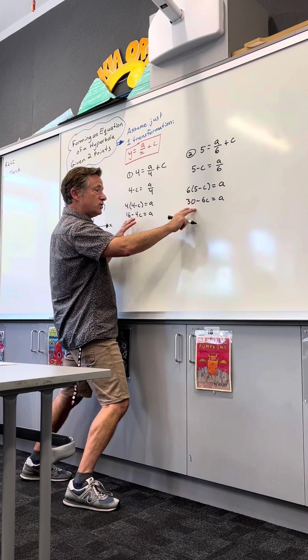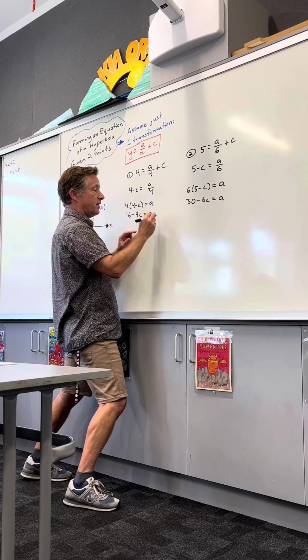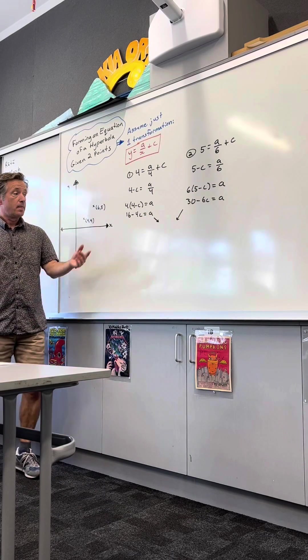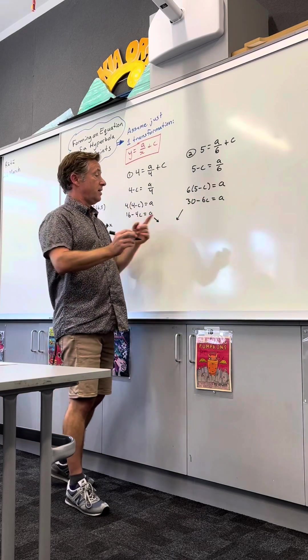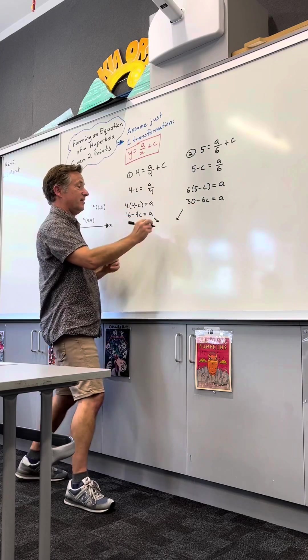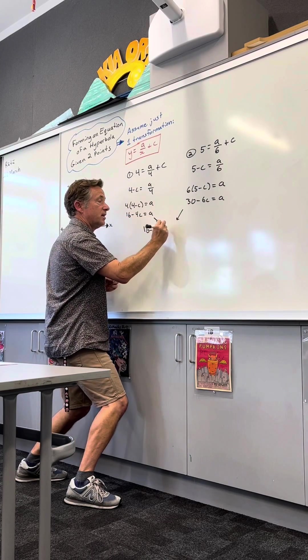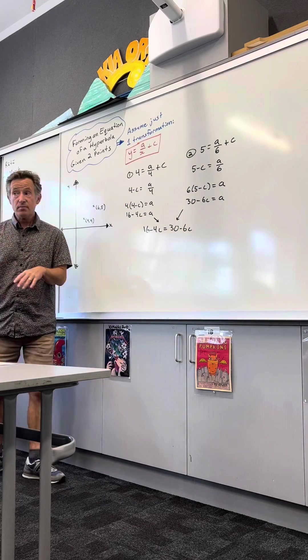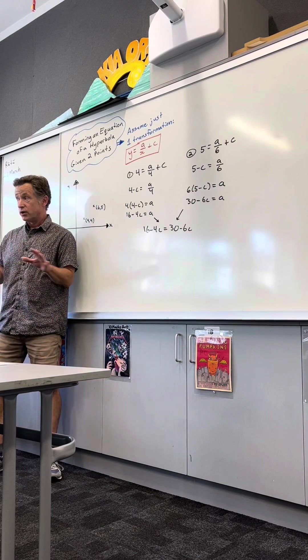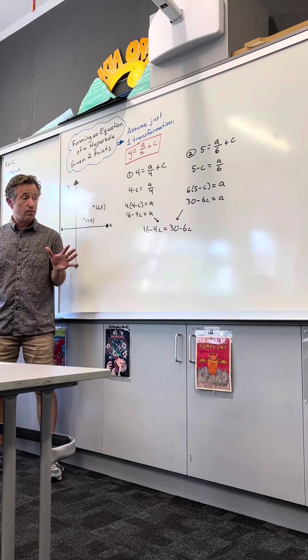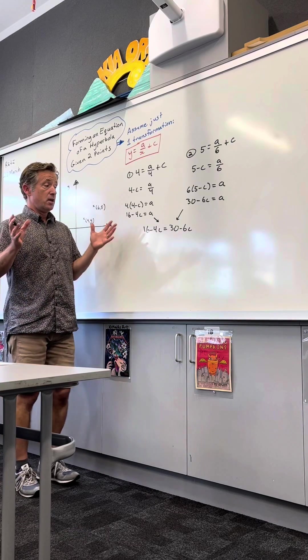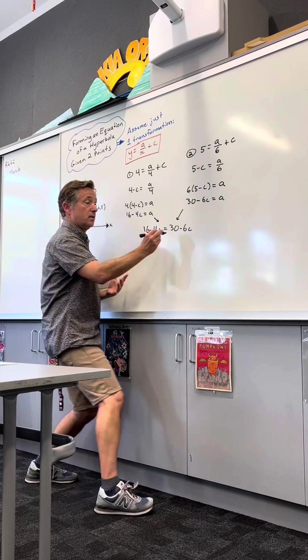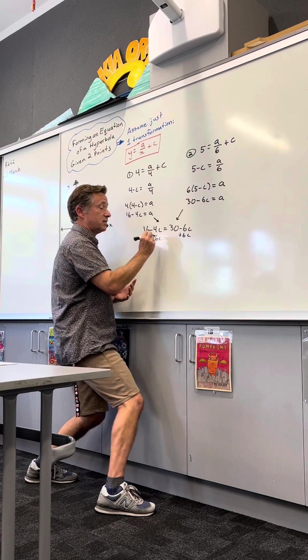So now when these two are equaling the same thing, that means I can set them equal to each other and solve for c. If this equals a and this equals a, then this equals this. So I get 16 minus 4c equals 30 minus 6c. If you have a graphics calculator, you can solve it right away. So you get a little bonus there if you have a graphics calculator. If you don't, you just have to do it the old-fashioned way. It's a linear equation.